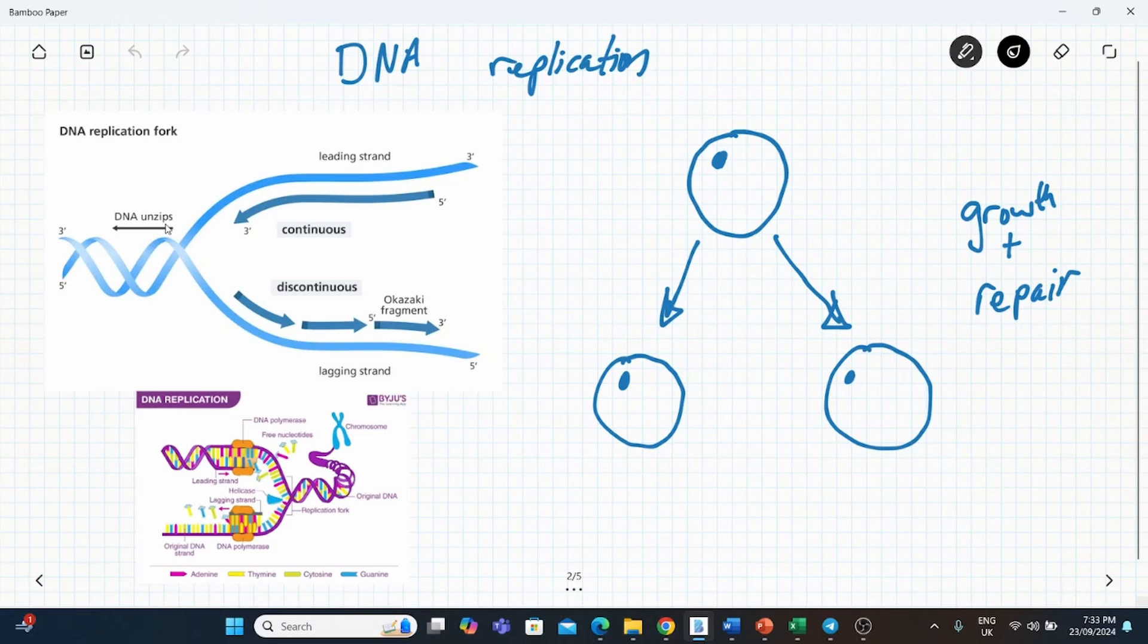And then the how it happens, you've got a few clues on the side. So first of all you've got your DNA double helix. It has to unzip. You've got two strands, a leading strand and a lagging strand. Don't worry too much about that. Basically that determines the direction.